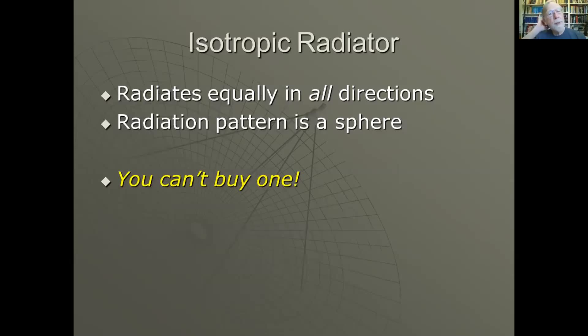An isotropic radiator is an imaginary antenna. It radiates equally in all directions. In free space the radiation pattern is a sphere. You can't buy one - they don't exist - but they're very useful.